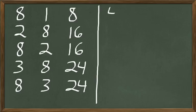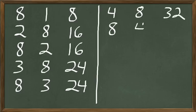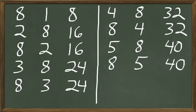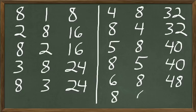Then we do 4 times 8 — 4 times 8 are 32. And 8 times 4, that's also 32. And then 5 times 8, how many are 5 times 8? 40. And 8 times 5, how many do you think that is? That's 40. And how about 6 times 8? 6 times 8 are 48. And 8 times 6, how many are 8 times 6? That's 48.